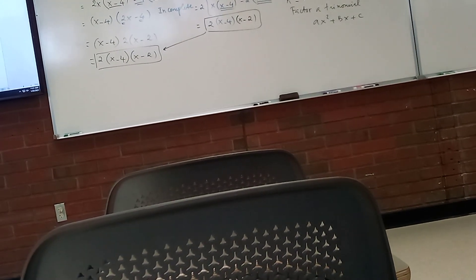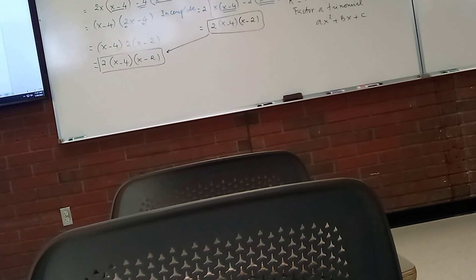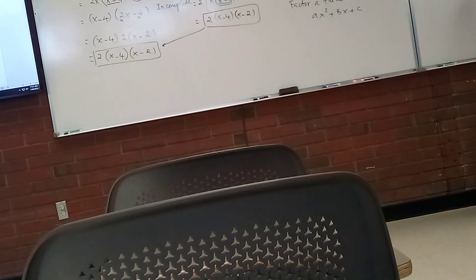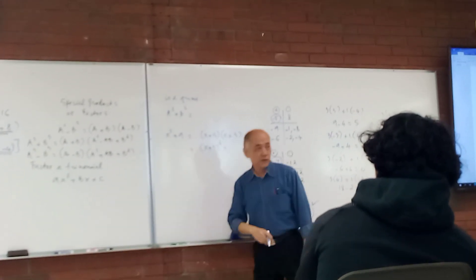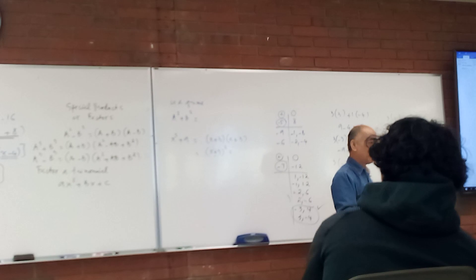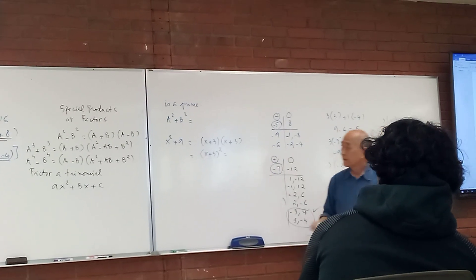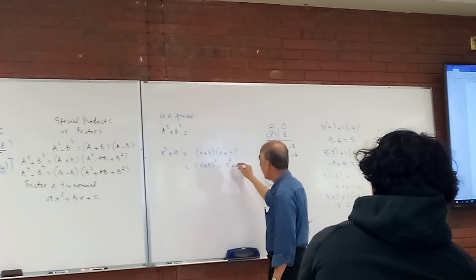x², x + 3 times x + 3. This is (x + 3)². What is (x + 3)²? x² + 3? That's right, that's right.